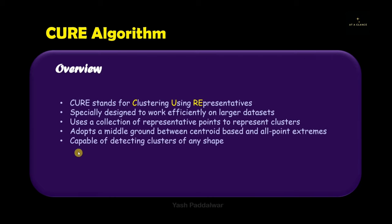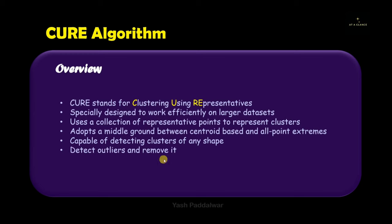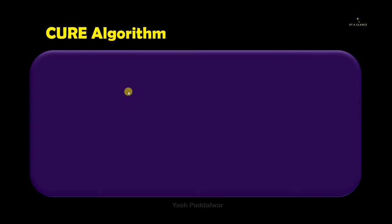A key speciality of CURE algorithm is that it is capable of detecting clusters of any shape. In partitioning and hierarchical clustering we could only see spherical-shaped clusters, but CURE can find clusters of any shape — S-shaped or overlapping. The major speciality is that it detects and removes outliers automatically, identifying which data points behave abnormally and not making them part of any cluster, so we don't have to separately find outliers.